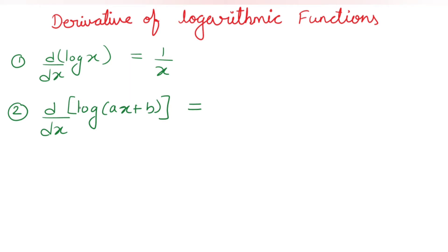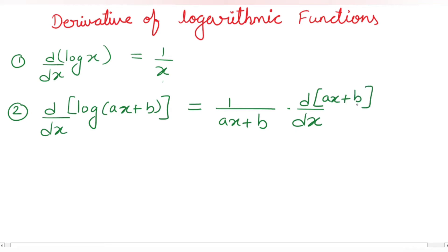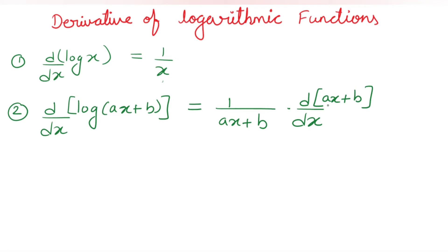तो कौनसे formula से compare हो रहा है — log x वाले, derivative of log x — क्योंकि log लिखा है। तो यह क्या हो जाएगा: 1 upon (ax + b)। उसके बाद हम देखते हैं कि हमारा disturbance term कहाँ पर दिखाई दे रहा है। यहाँ पर x था, लेकिन यहाँ पर ax + b आया है, तो यह हमारा disturbance term हो जाएगा। तो disturbance term का हमें d/dx of (ax + b) लिखना है। जो term जहाँ दिखाई दे रहा है, सिर्फ वहाँ उसका derivative लिखना है — इस तरह के examples derivative of logarithmic function कहलाते हैं।